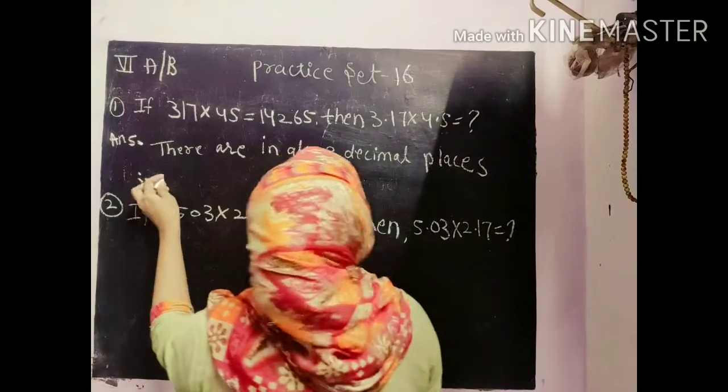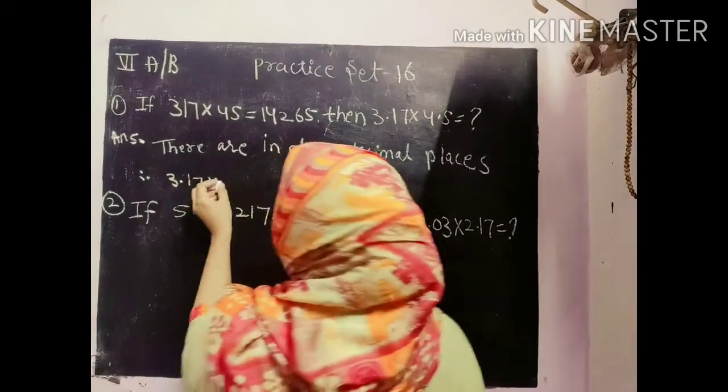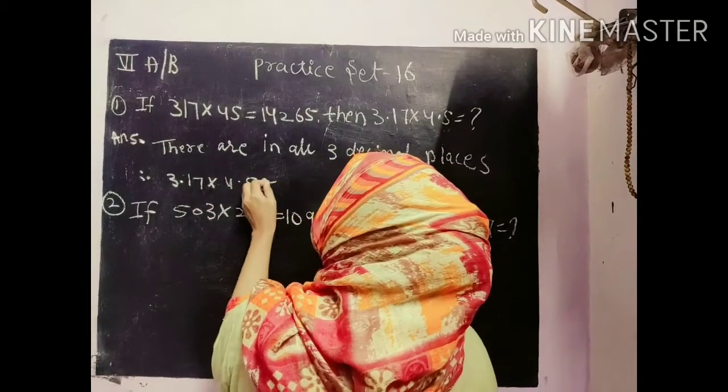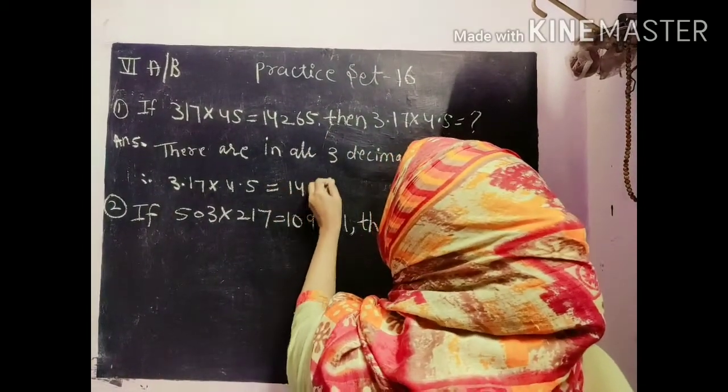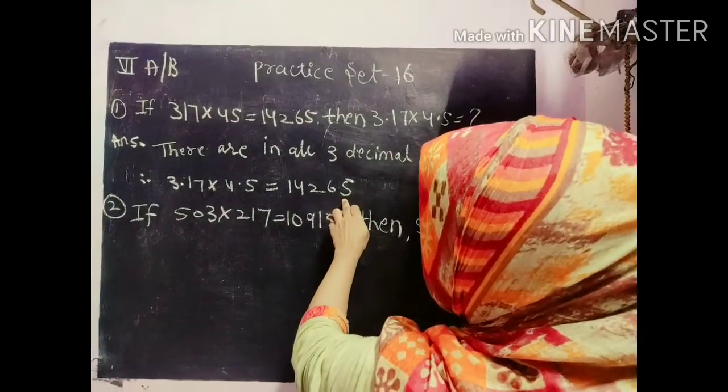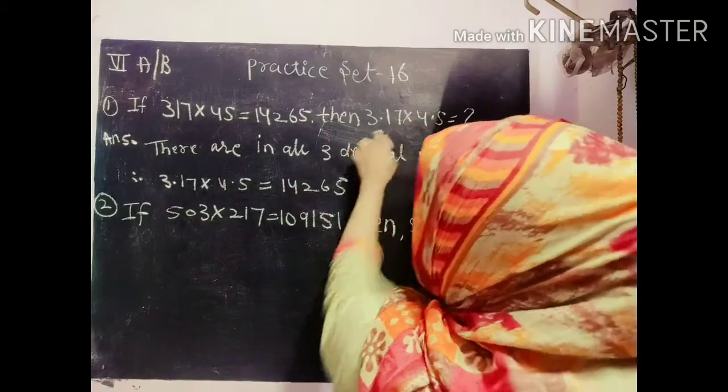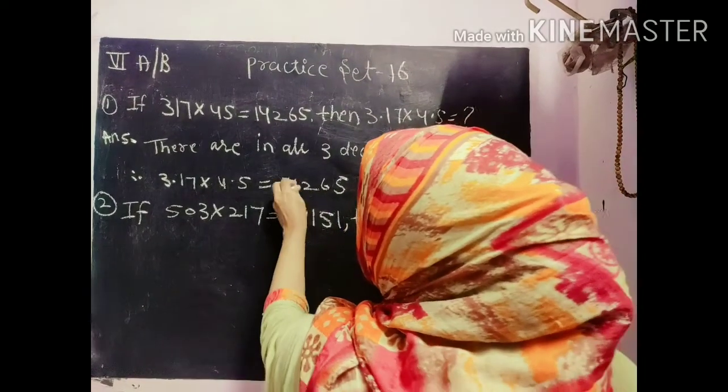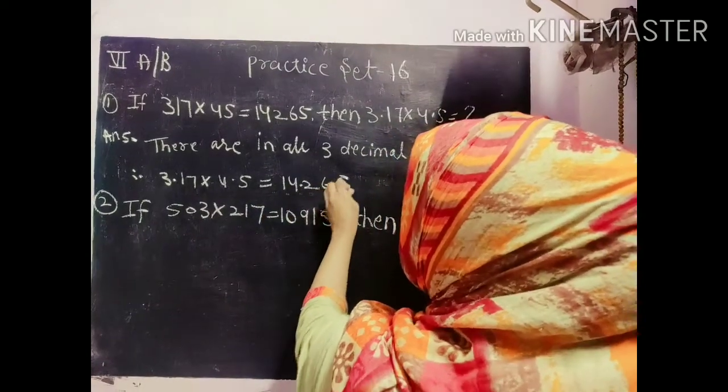So the answer will be 3.17 into 4.5 is equal to 14265. So here after how many numbers we will put the point? 1, 2, 3. So 1, 2, 3. So answer will be 14.265. Okay.